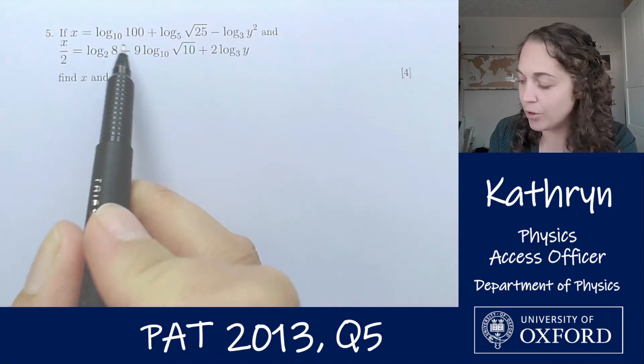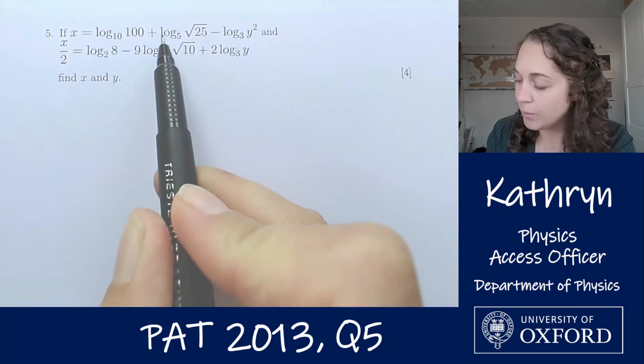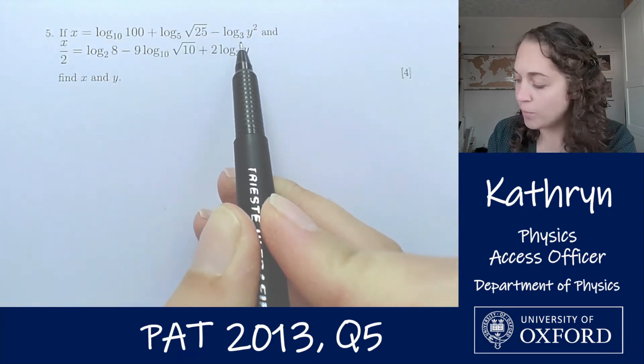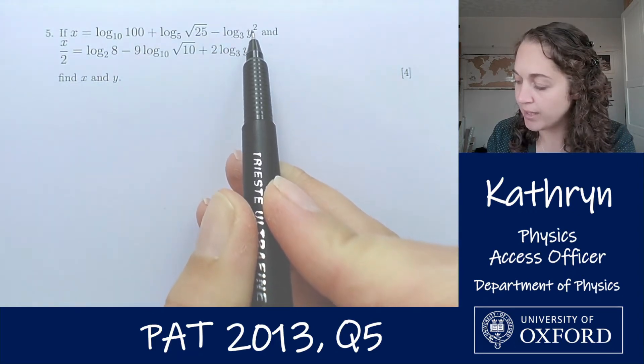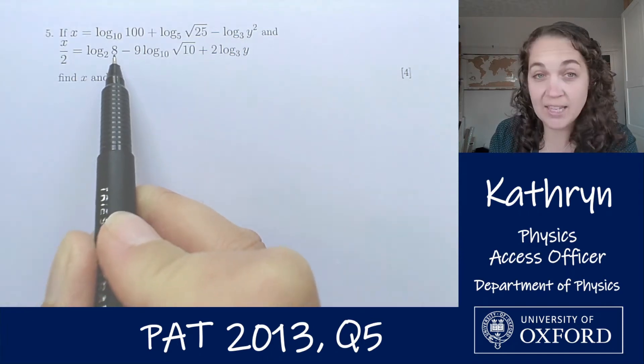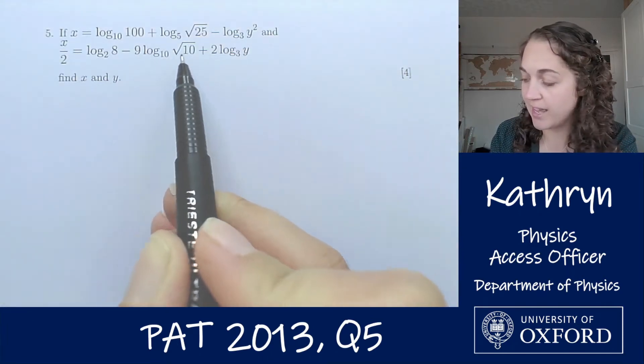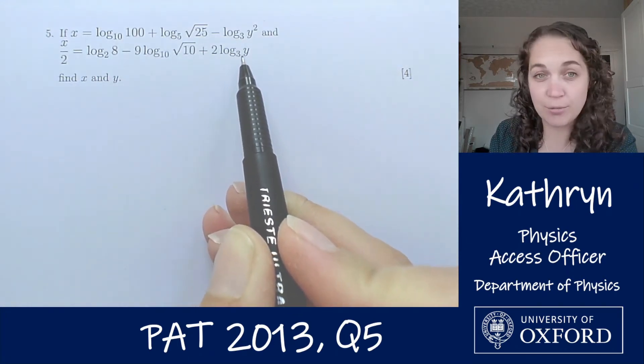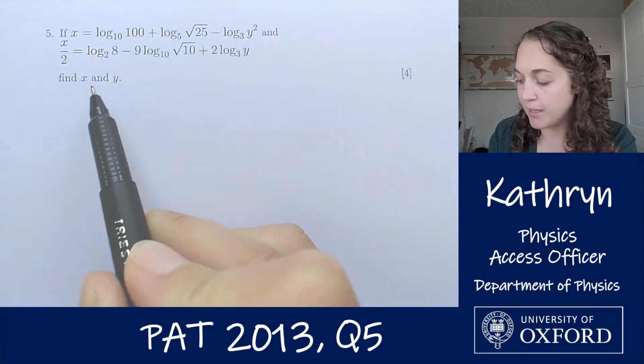If x equals log base 10 of 100 plus log base 5 of root 25 minus log base 3 of y squared and x over 2 equals log base 2 of 8 minus log base 10 of root 10 plus 2 log base 3 of y, find x and y.